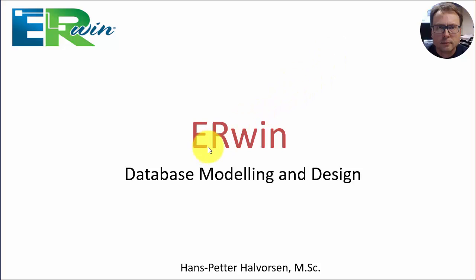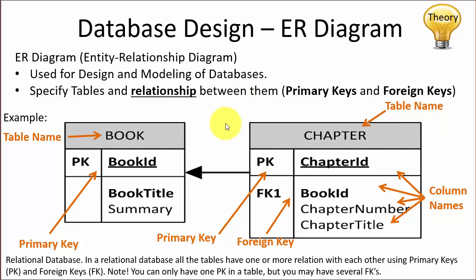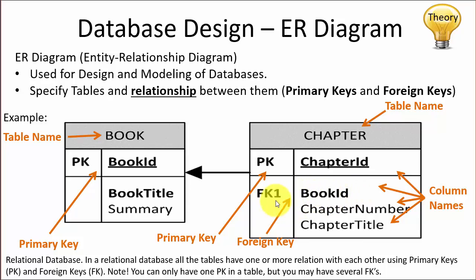In this part, we will design the database using Erwin. Let's start with some basic database theory — what we call ER diagrams, entity relationship diagrams. Here we see a simple ER diagram with two tables. We have a book table with primary keys and some columns. We have a second table called chapter, which also has a primary key and a foreign key — this table points to the primary key in the book table. That's the basic feature of database modeling: creating tables and the relationships between them.